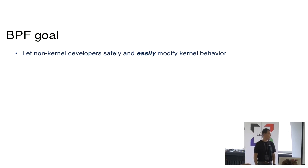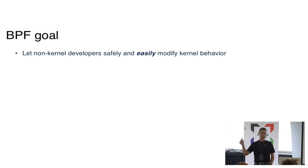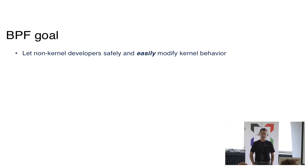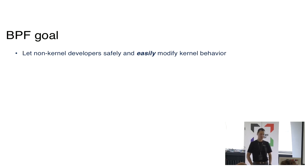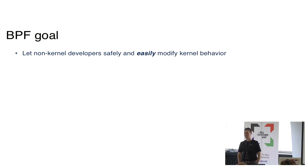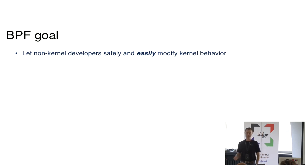The first goal is to safely and easily modify kernel behavior. Safety was in BPF from the start — it's kind of baked into the architecture, and I think we did a pretty good job keeping safety in check. There were a few bugs over the years, but it worked pretty well. The easy part on the other side didn't work quite so well. BPF being hard to use is the number one complaint we hear all the time, and that's what we try to address pretty much non-stop.